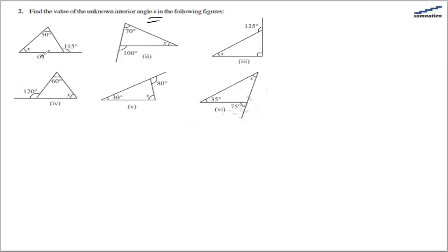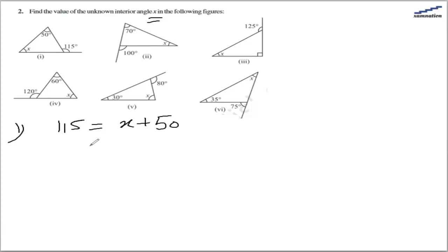In the first part, the exterior angle is 150 degrees, and that is equal to the sum of the opposite interior angles, which are x plus 50. Solving this, we get x equal to 150 minus 50, which is equal to 65 degrees.